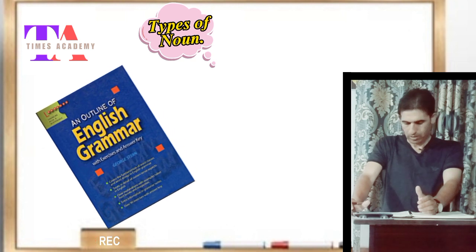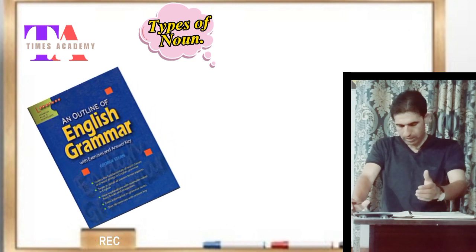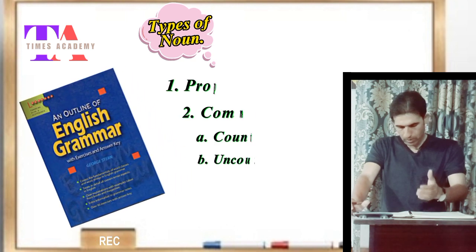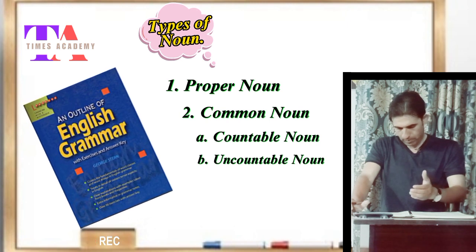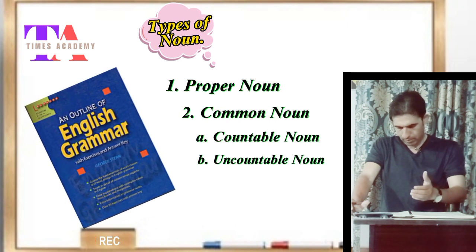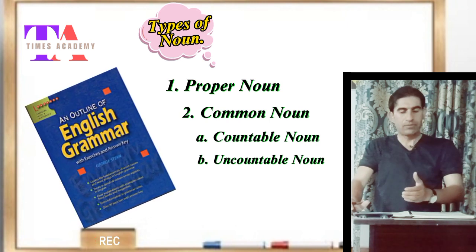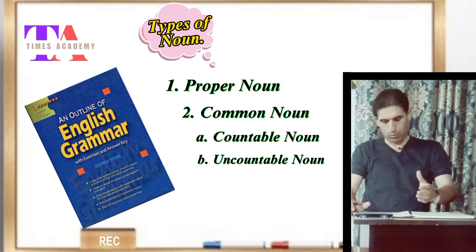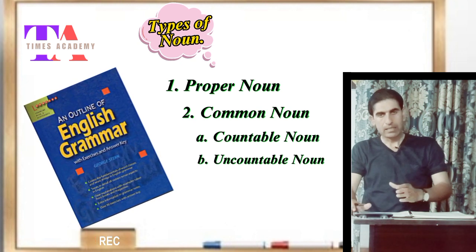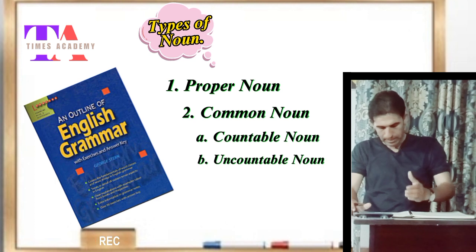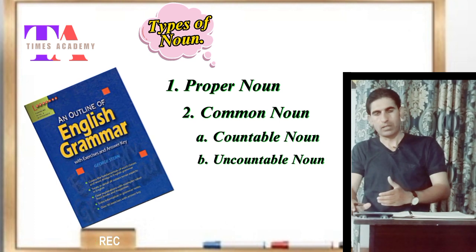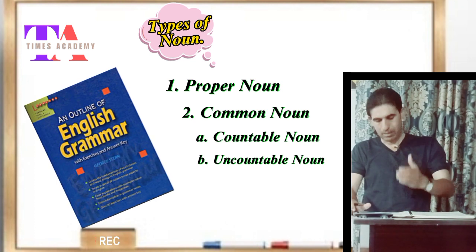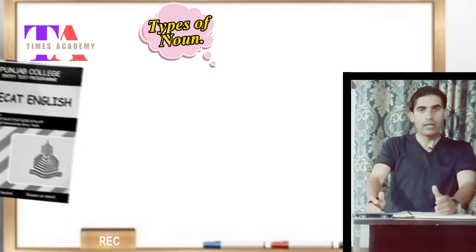The fifth source is Outline of English Grammar written by George Stearns, where noun has mainly two important classes: number one, proper noun; and number two, common noun. Further in this book, the common noun has been classified into two subcategories: number one, countable noun; and number two, non-countable noun, which are the subcategories of the common noun.